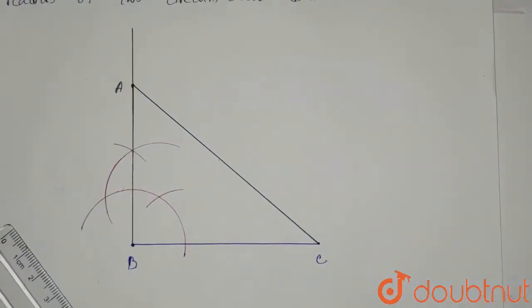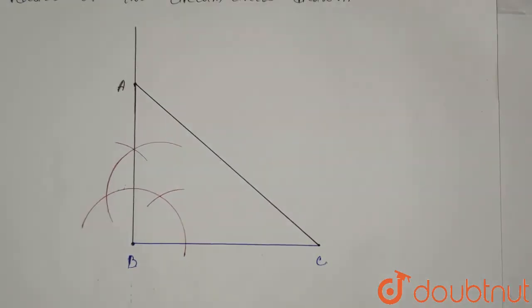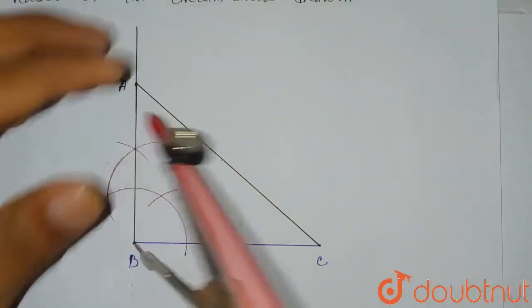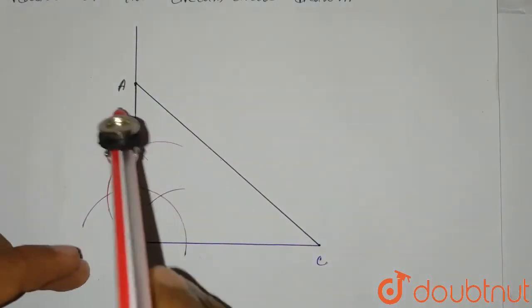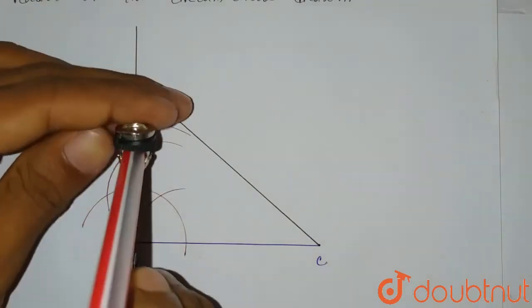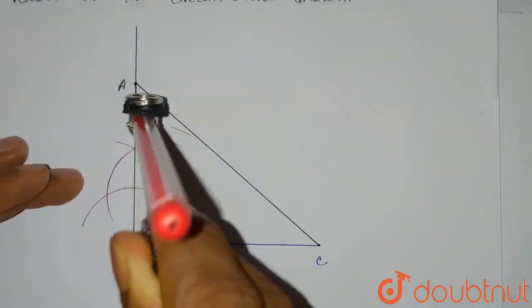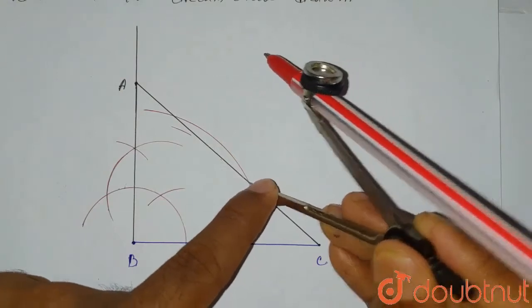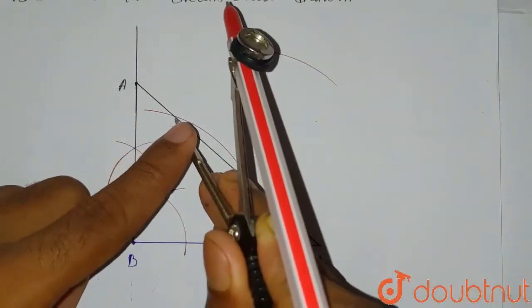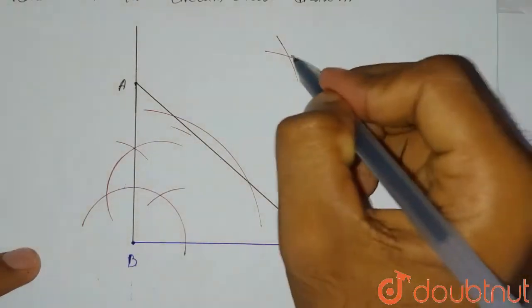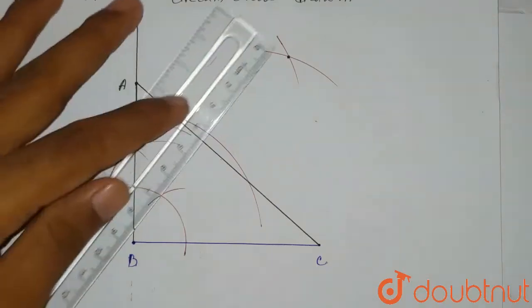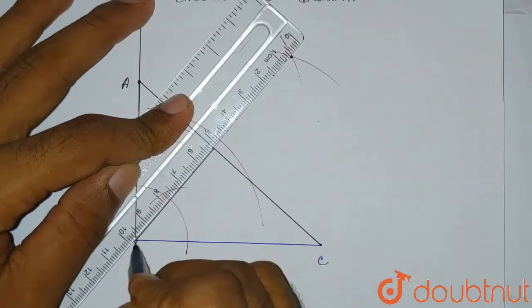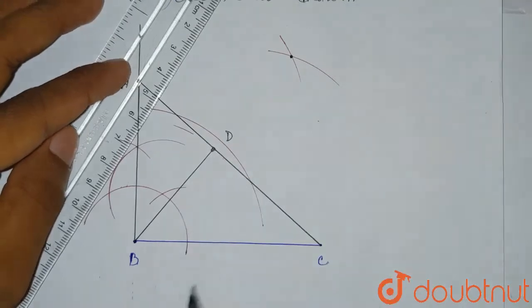We join A and C to complete our triangle ABC. It is given that BD is perpendicular to side AC, so we draw the perpendicular from point B to line AC. We place the compass at B with a length exceeding AC, draw an arc intersecting AC at two points, then draw two more arcs from those points. Joining the intersections gives us point D on AC, which is the foot of the perpendicular from B.